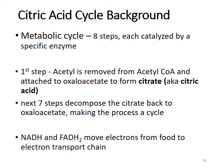The citric acid cycle is a metabolic cycle of about eight steps, each catalyzed by a specific enzyme. It's called the citric acid cycle because in the first step, the acetyl is removed from acetyl coenzyme A and attached to oxaloacetate to form citrate or citric acid. The next seven steps break citrate back down to oxaloacetate, making the process a cycle. The NADH and FADH2 produced move electrons from organic molecules to the electron transport chain in the last step of cellular respiration.